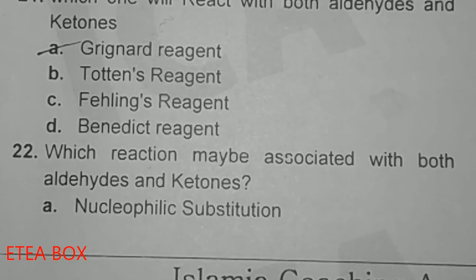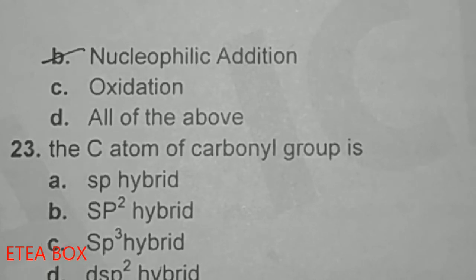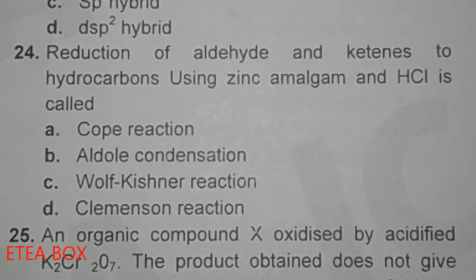The reaction associated with both aldehydes and ketones is nucleophilic addition reaction; option B is correct. The carbon atom of the carbonyl group is sp2 hybrid. Reduction of aldehydes and ketones to hydrocarbons using zinc amalgam and HCl is called Clemmensen reduction; option D is correct.